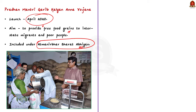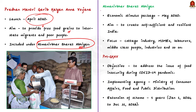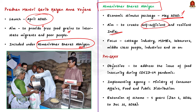PMGKAY was launched in April 2020. Under the scheme, the government provides free food grains to interstate migrants and poor people across India. The scheme was included under the Atmanirbhar Bharat Abhiyan or ABA. ABA is an economic stimulus package introduced in May 2020 during the COVID-19 outbreak, aimed at creating a self-sufficient and resilient India, focusing on various sectors including cotton industries, MSMEs, laborers, middle class people, and industries. Basically, ABA is a relief package launched to attain economic recovery post the COVID-19 pandemic.